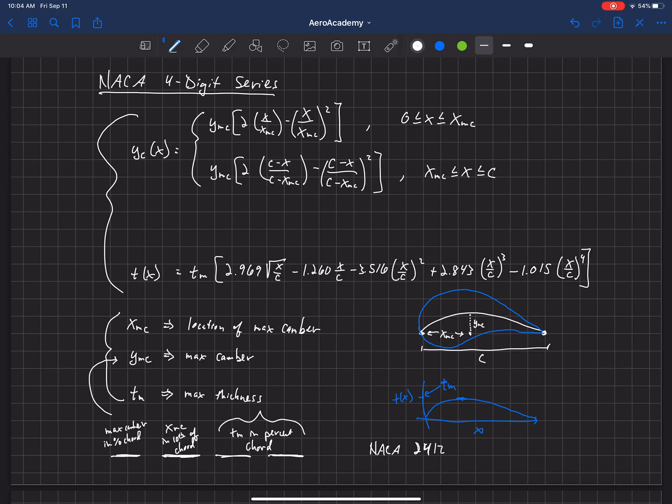Well, that means that that first digit is the maximum camber. So that means that it has a 2% camber. And so that means that this YMC up here, the height of YMC there is 2% of the chord. So usually the camber is pretty small. We're talking about 2%, two hundredths of the length of that chord is how high the camber line is going to come up off of the X-axis.